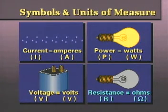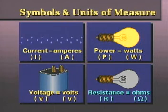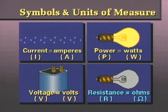Resistance is represented by the letter R. The unit of measure for resistance is the ohm, and it is represented by the Greek letter omega.